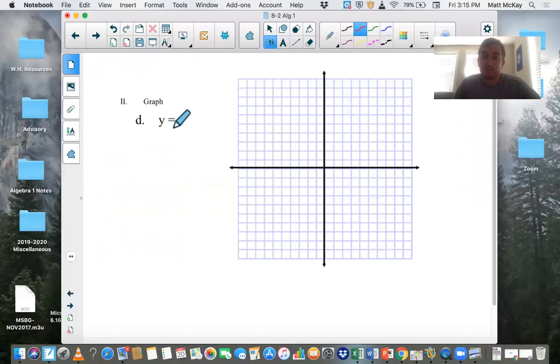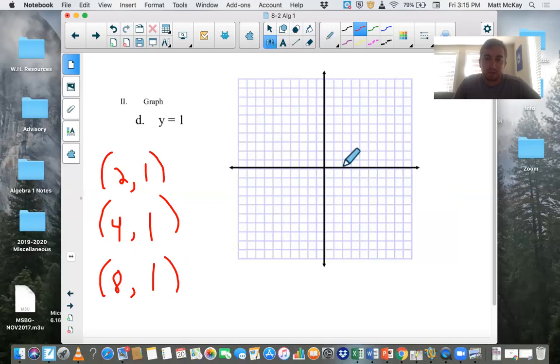Okay, just like with y, if y is one, we'll put ordered pairs together. No matter what x is, y is always going to be one. We could call x2, we could call x4, we could call x8. Okay, go over two spots, y is one. Go over four spots, y is one. Go over eight, y is one.